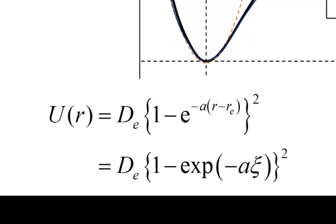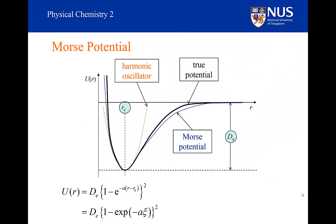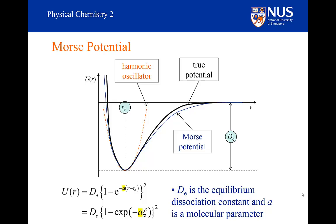D sub E is our equilibrium dissociation constant. There is another parameter, A, which is a property of the molecule, so it changes from molecule to molecule. As A gets bigger, the potential gets steeper at both small and large internuclear separations. In essence, A is a fitting parameter — there is no significant theory underpinning what it should be. It is an empirical value obtained from observation.